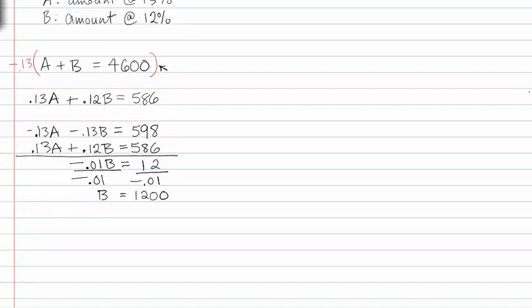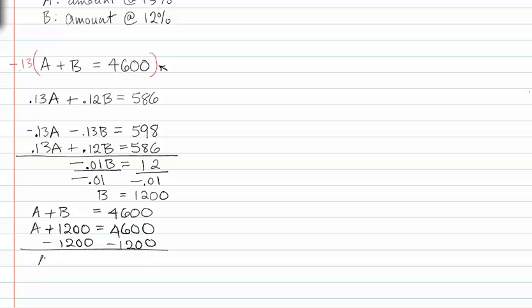Now that I know B, I can find A. If A plus B equals 4,600, and I know that B equals 1200, then if I subtract 1200 from both sides, A equals 3,400. So these are the two amounts that were invested.